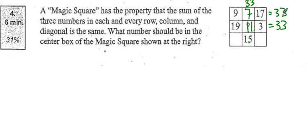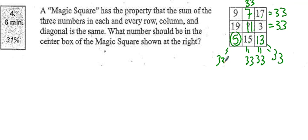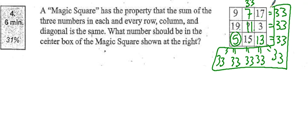Going diagonal now: 9 plus 11 is 20, so this has to be 13 in order to make that 33. And 17 plus 3 is 20, plus 13 is 33. We know this is already 33. The only thing left to prove is this last square: 17 plus 11 is 28, plus 5 gives me 33. And 9 plus 19 is 28, plus 5 is 33. So no matter what direction I go, I always end up with the sum of 33 by putting 11 in the center.